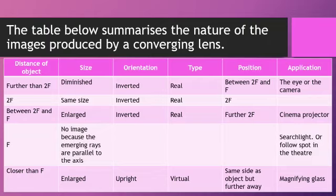If the distance of the object is at 2F, the image produced is the same size of the object. It is inverted, real, and located at 2F.